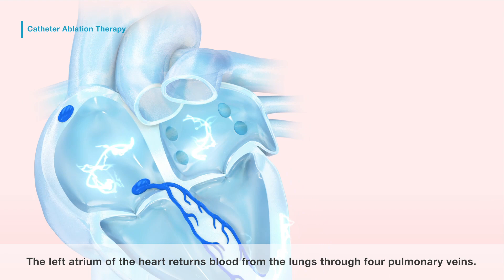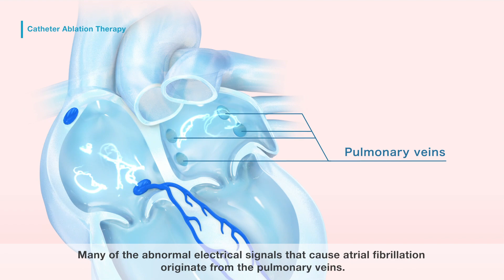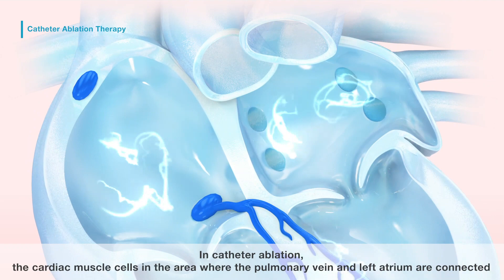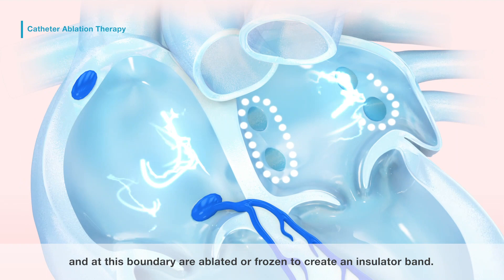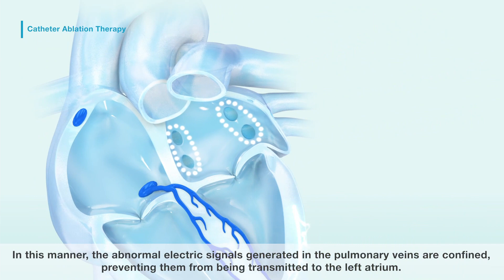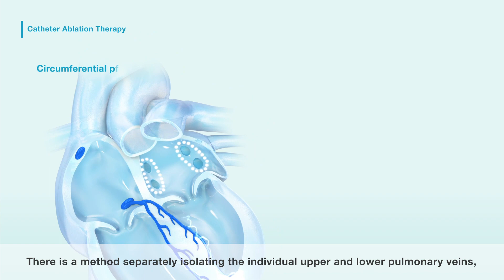The left atrium of the heart returns blood from the lungs through four pulmonary veins. Many of the abnormal electrical signals that cause atrial fibrillation originate from the pulmonary veins. In catheter ablation, the cardiac muscle cells in the area where the pulmonary vein and left atrium connect are ablated or frozen to create an insulator band. In this manner, the abnormal electrical signals generated in the pulmonary veins are confined, preventing them from being transmitted to the left atrium.